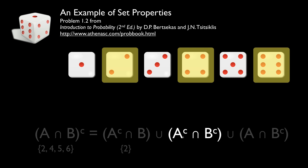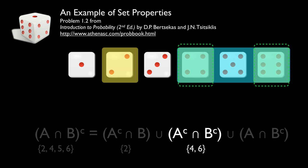Next, we'll look at the intersection of the complement of A with the complement of B. The complement of A is two, four, six. The complement of B is four, five, six. The outcomes covered by both sets are four and six.